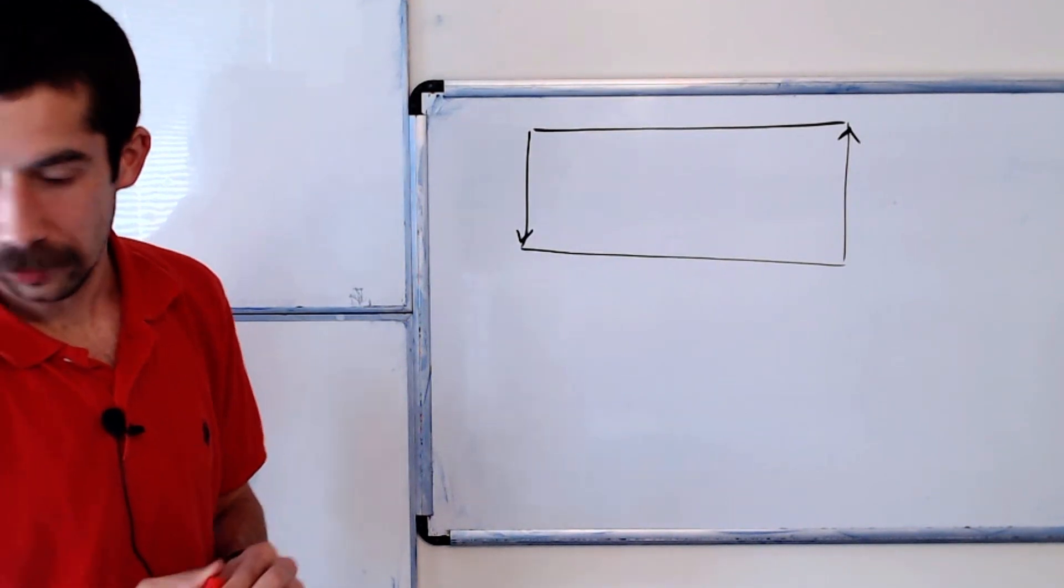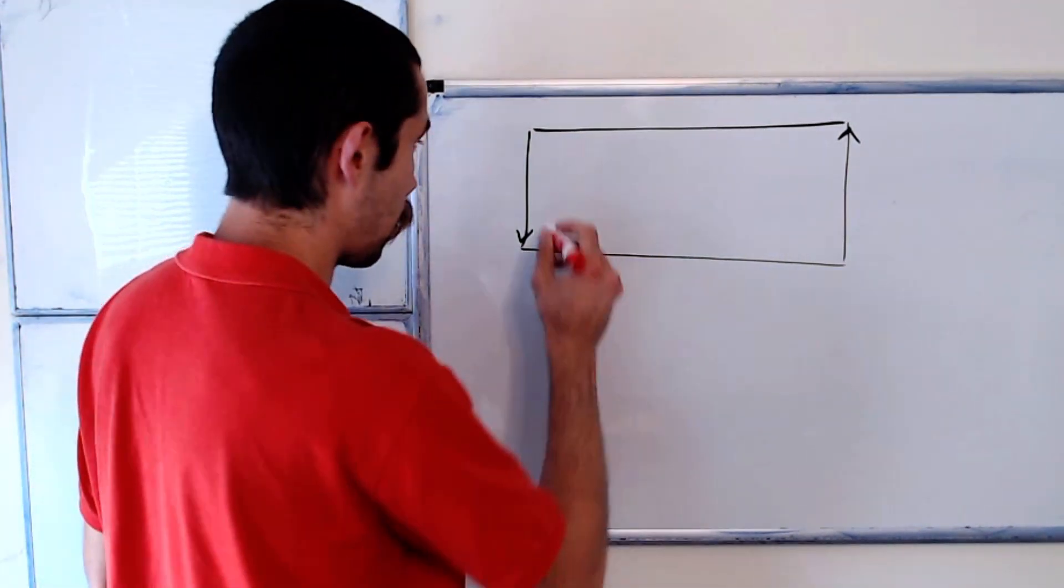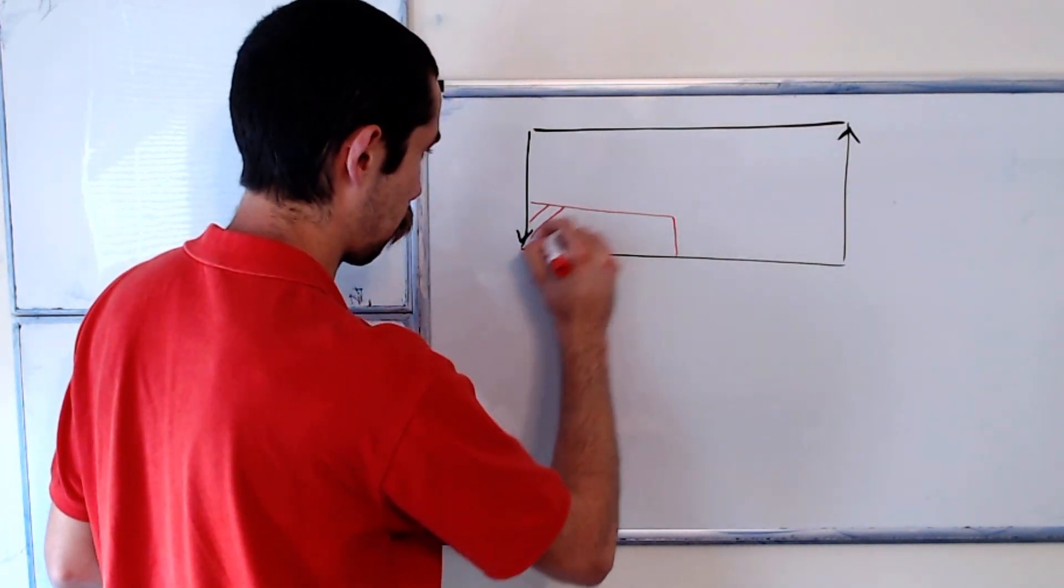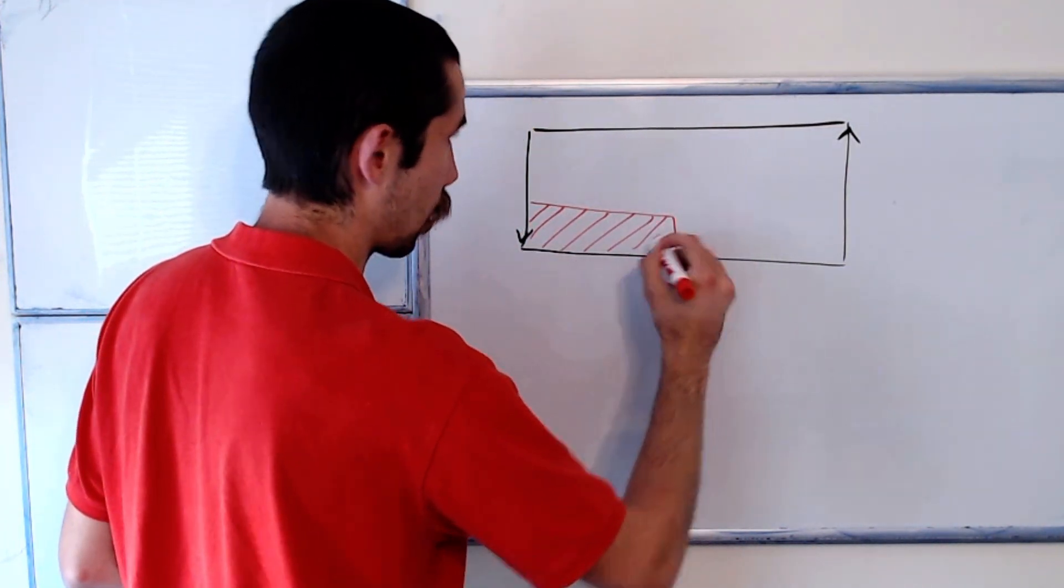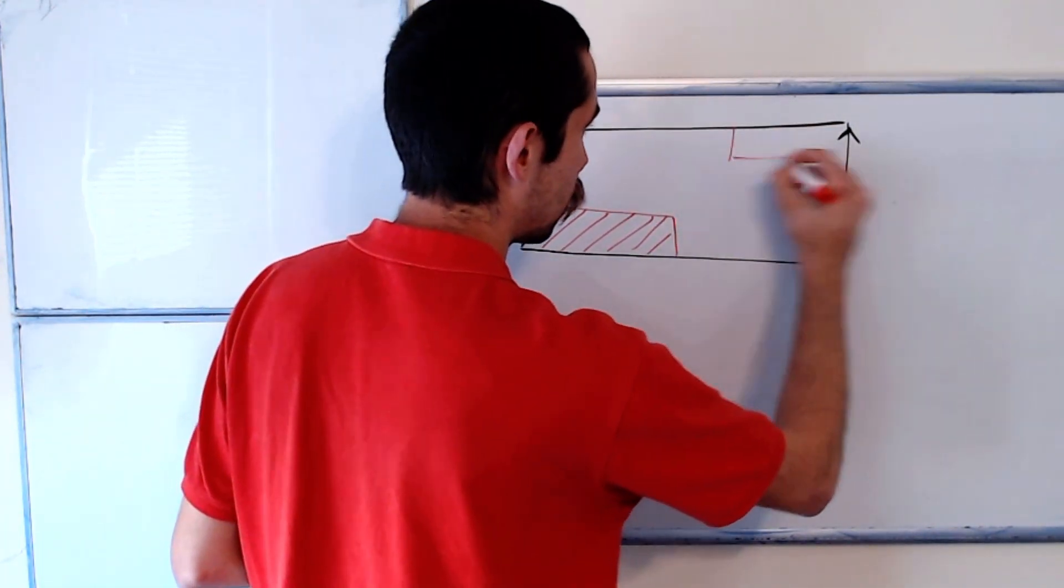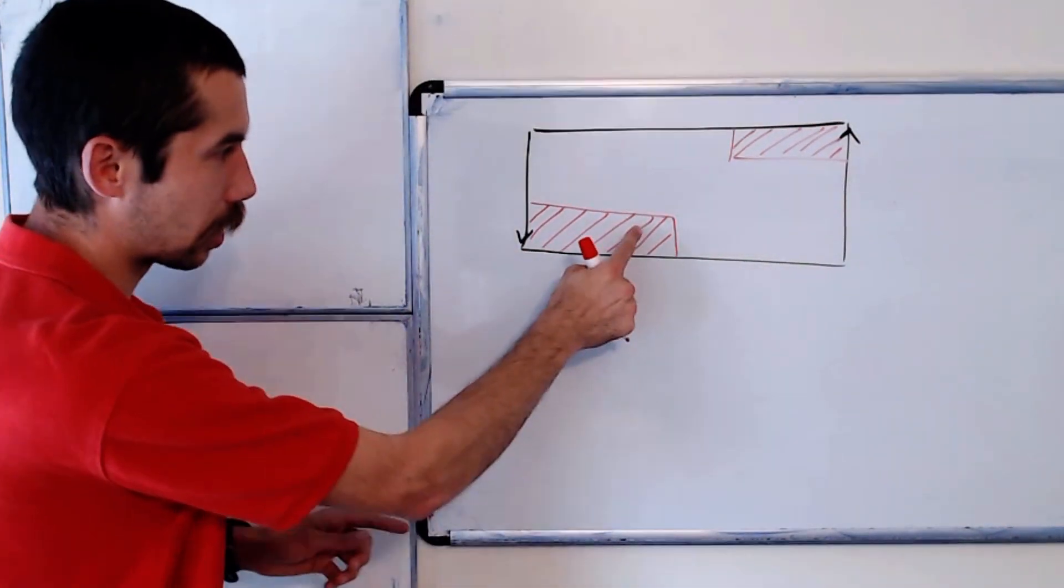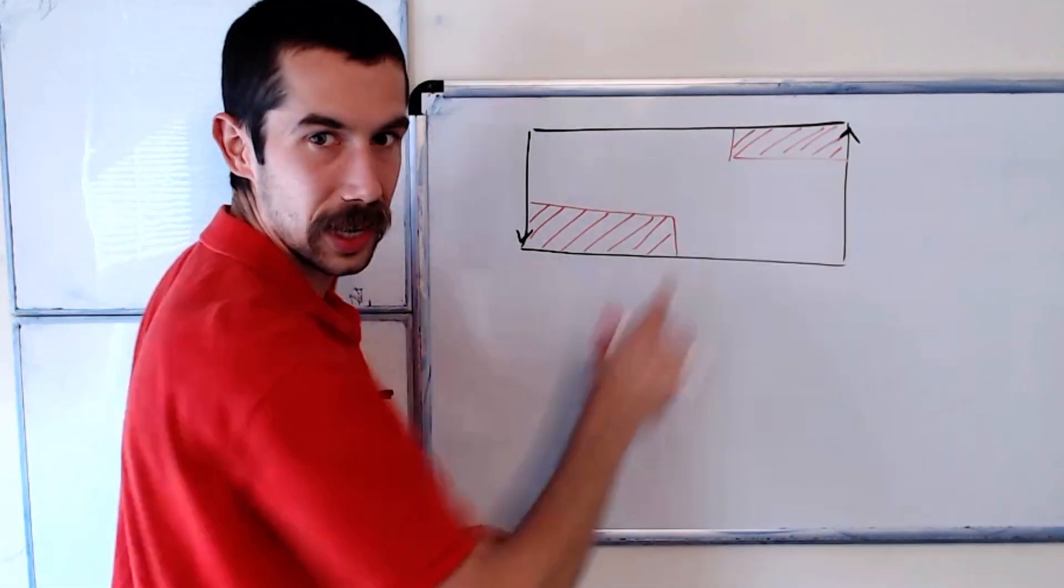So let's start with red. So maybe we have a red region down here that we're going to let wrap up up top. So this is just one region, right? Because you could go all the way down and it wraps up to the top.